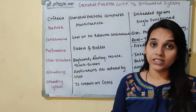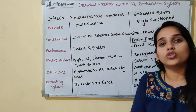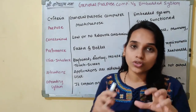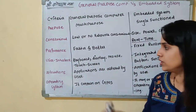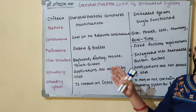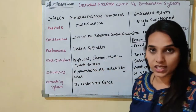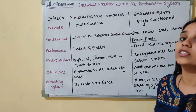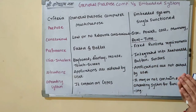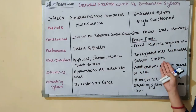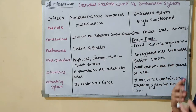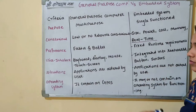Next is user interface — meaning how we give input. In general-purpose computer systems, we use keyboard, display, mouse, mobile phones, and touch screen. Whereas embedded systems are integrated into the real-world environment, and we give input through buttons and sensors. Sensors simply sense the data and respond.